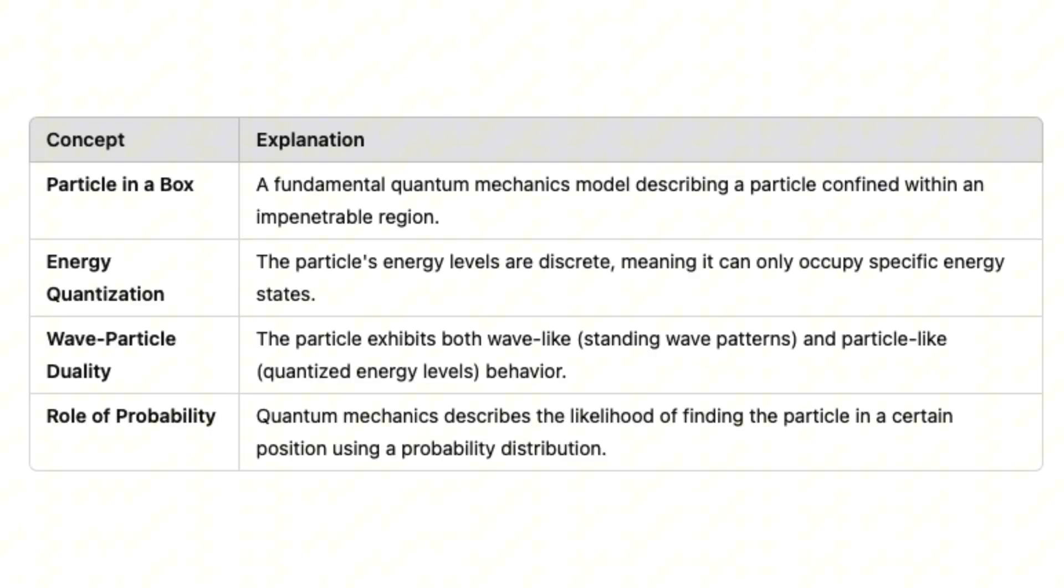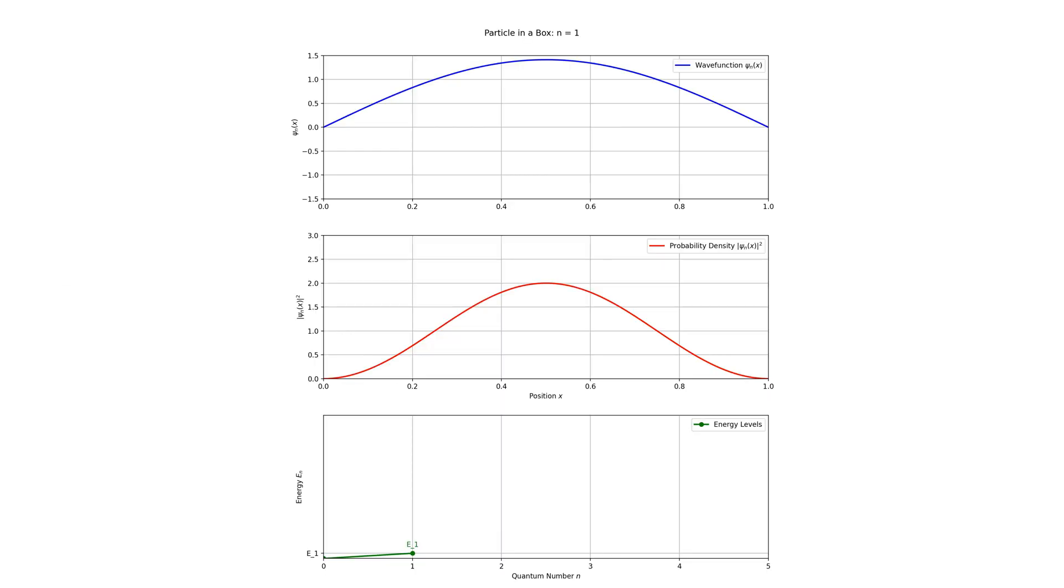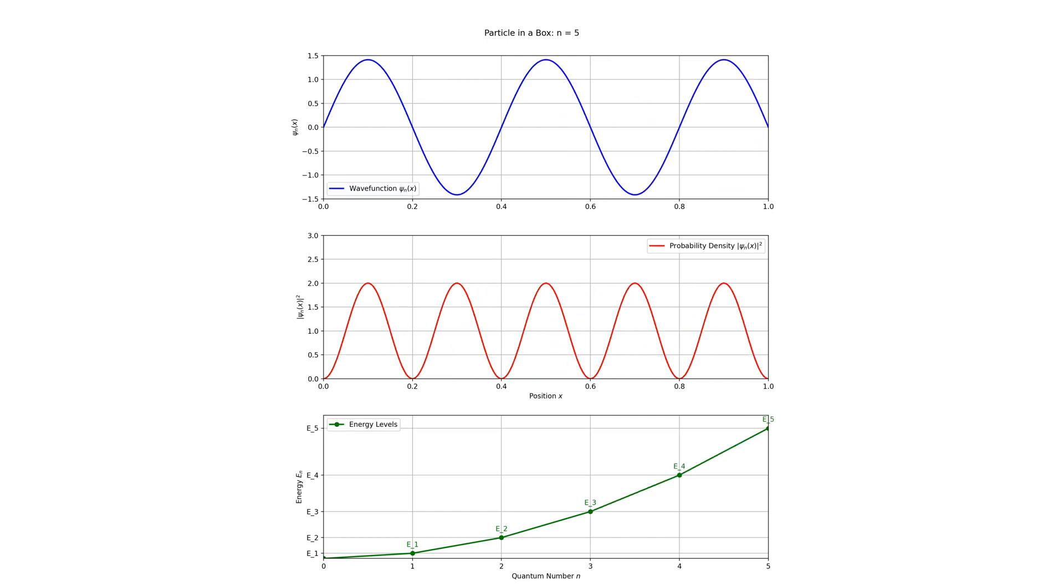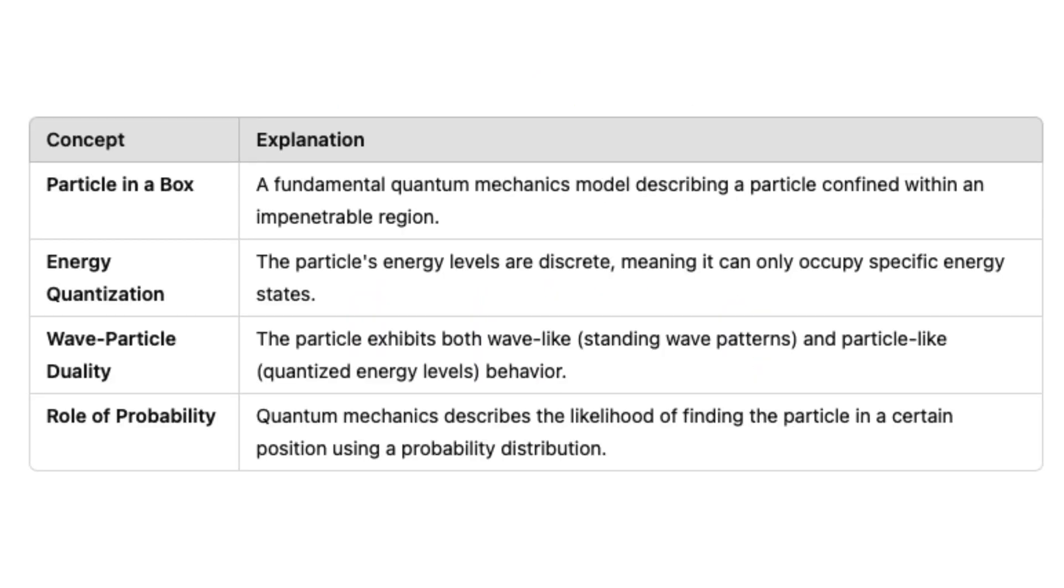The particle-in-a-box problem is a cornerstone of quantum mechanics describing a particle confined to move within a finite region with impenetrable walls. Through this simple yet powerful example, we'll discover how energy becomes quantized at the quantum level, what wave-particle duality looks like mathematically.